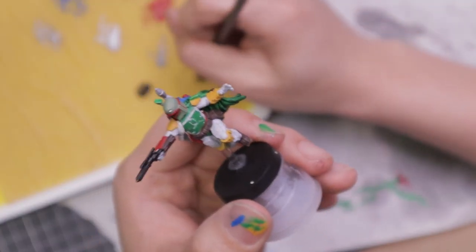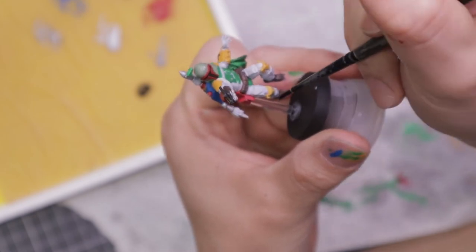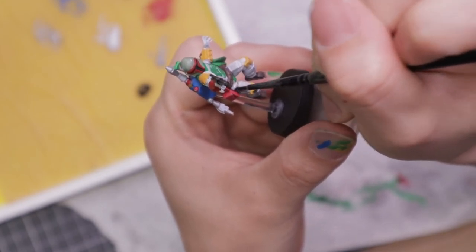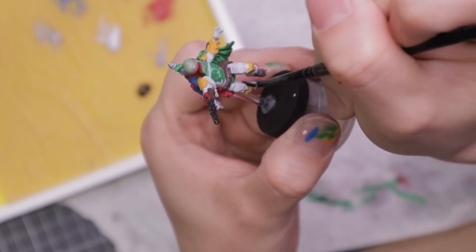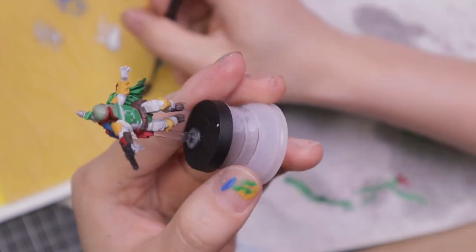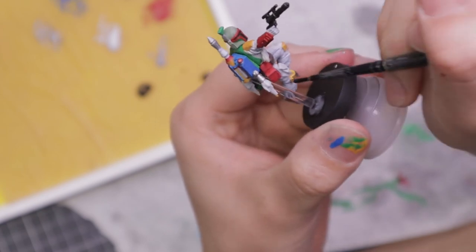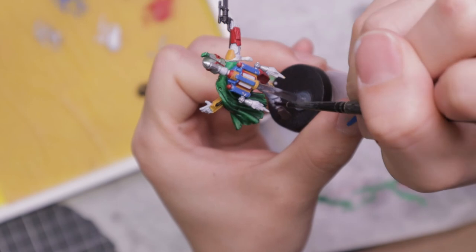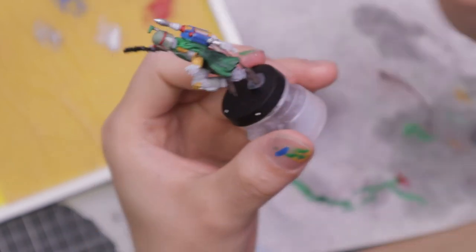First I'm going to start with some black wash, but I'm going to mix it with water to dilute it. I want to have a little bit of shading, but I don't want to overpower it because I don't want it to look dirty. I just want it to look shaded.